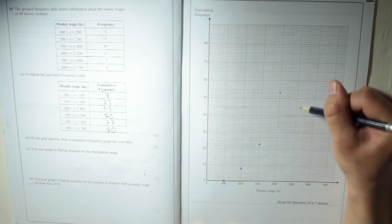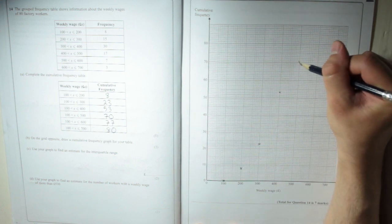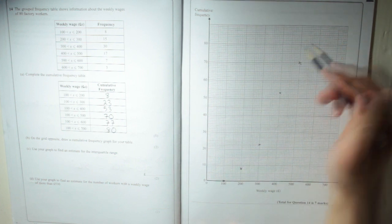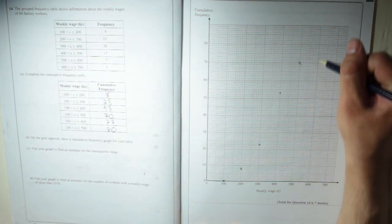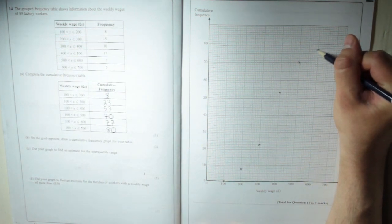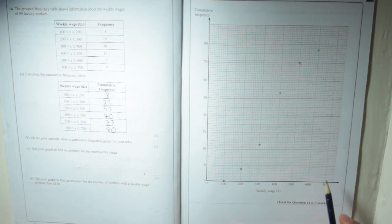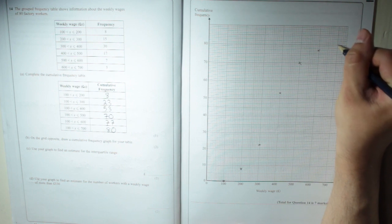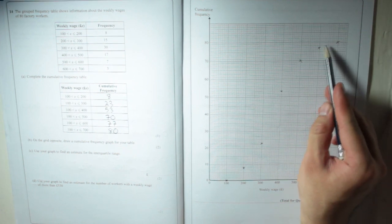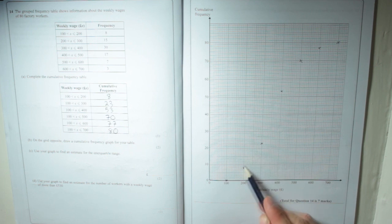500 goes with 70. 600 goes with 77. And then the last one, 700 goes with 80. Now you can see that you're going to get this sort of slight S curve going on.